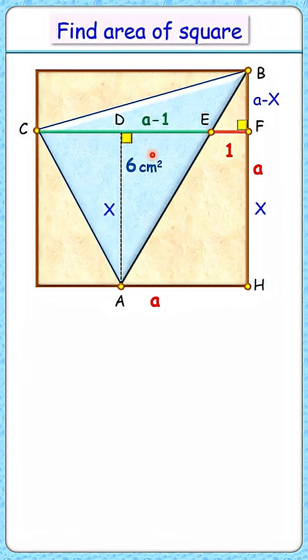Now let's divide this blue triangle into two areas. One is this pink triangle. The pink triangle area will be half of base (a minus 1) times height x, and this yellow triangle. For this yellow triangle, the base will be (a minus 1) and height will be (a minus x), and the sum of these two areas is 6.